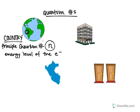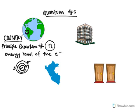The country represents the principal quantum number n, the energy level of the electron. If we look at the Bohr model of the atom, where we have the electron's orbitals represented as circular orbitals around the nucleus, we have electrons in each shell. We could have the innermost ring be the first shell, then the second and the third. So n can equal one, for example, to tell us that the electron is on the first shell — the first energy level of the atom.